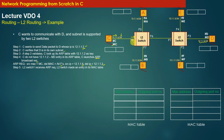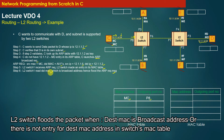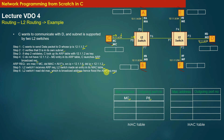L2 Switch 1 receives the ARP broadcast request and makes an entry in its MAC table. Whenever an L2 switch receives a packet with an Ethernet header, it performs MAC learning. The switch inspects the source MAC address in the ARP broadcast request and the port number on which the message was received, and accordingly makes an entry in the MAC table. It then reads the destination MAC address, which is the broadcast address, and floods the ARP request message on all ports.